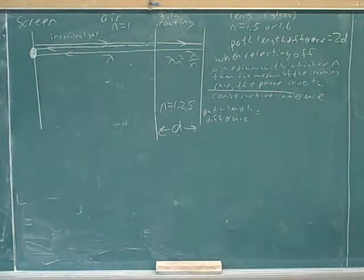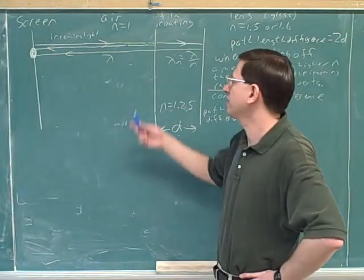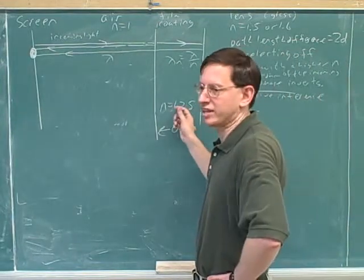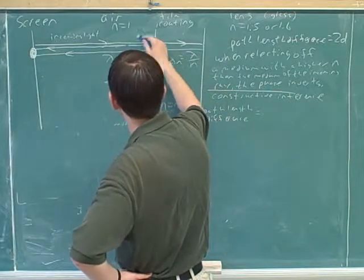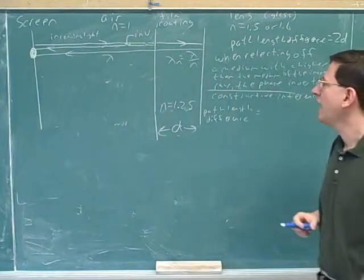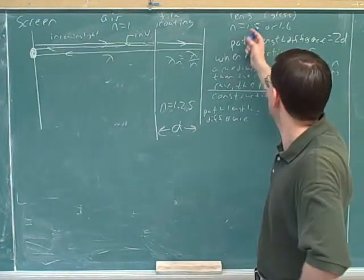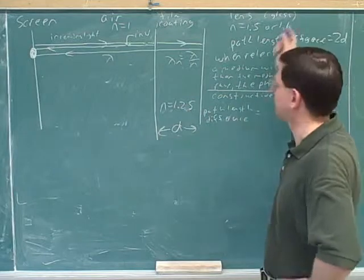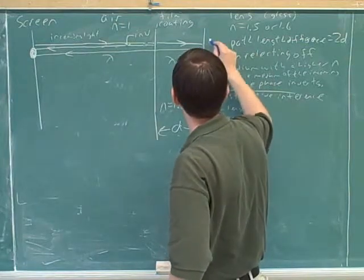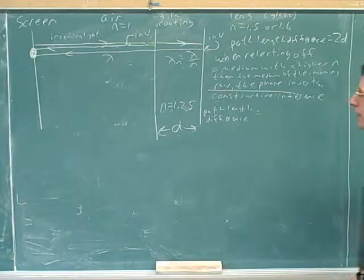Now, before we talk about the path length difference, we need to focus on whether any inversions are going to happen. Well, will there be an inversion when the air, when the light passes from the air to the film? Yes. When it reflects off the film? Yes. Because the film has a bigger n. So I'm going to make a note that this ray here got inverted. There was an inversion for that reflected ray. OK. And how about when we reflect off of the glass, will there be an inversion? Yes. And how do we know? Because this 1.5 is bigger than 1.25. And 1.6 would be even bigger. This is why we don't care about the exact number. We're just comparing it to this. So there's going to be another inversion for this reflection. Two inversions. Two inversions.